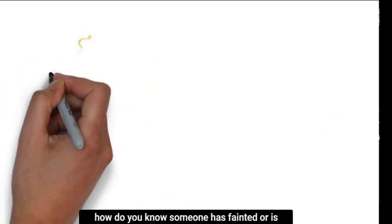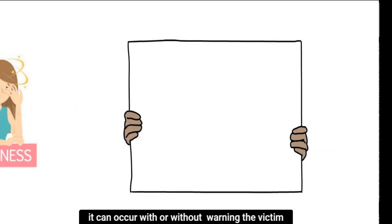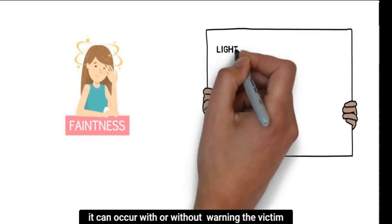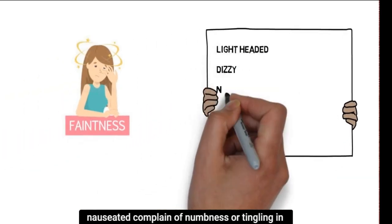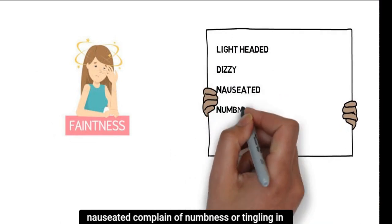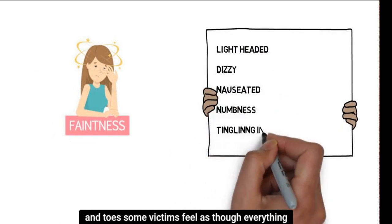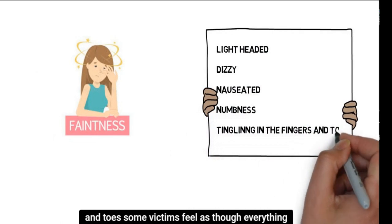Now how do you know someone has fainted or is about to faint? It can occur with or without warning signs. The victim may feel lightheaded, dizzy, nauseated, complain of numbness or tingling in the fingers and toes.